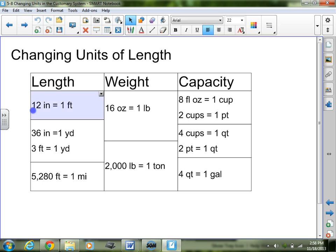As review, there are 12 inches in 1 foot, 36 inches in 1 yard, 3 feet in 1 yard, and 5,280 feet in 1 mile. As far as weight, there are 16 ounces in 1 pound and 2,000 pounds in 1 ton. For capacity, there are 8 fluid ounces in 1 cup, 2 cups in 1 pint, 4 cups equals 1 quart, 2 pints also equals 1 quart, and 4 quarts equals 1 gallon.